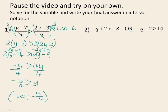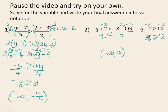In question 2 we have another compound inequality, but it's an 'or' situation. So either q plus 2 is less than negative 8, or q plus 2 is greater than or equal to 14, and we solve each separately. Subtracting 2 from both sides of the first gives q is less than negative 10. Subtracting 2 from both sides of the second gives q is greater than or equal to 12. In interval notation we have two separate intervals: negative infinity to negative 10 with a round bracket, union with 12 to positive infinity — 12 gets a square bracket because it is included, and infinity always gets a round bracket.